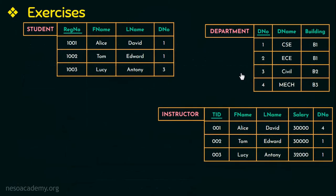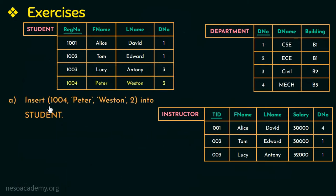The first update operation is to insert a new tuple with values 1004, Peter, Western, and 2 into the student relation. The domain constraint is not violated since all attribute values match the correct data types. The key constraint is not violated because the new primary key value 1004 does not already exist. The entity integrity constraint is not violated because the primary key value is not null.